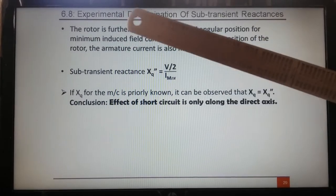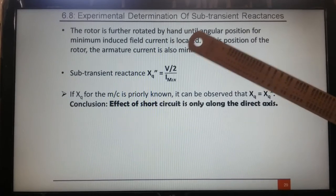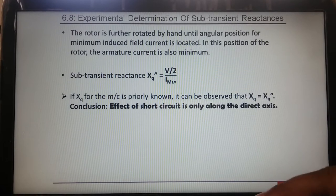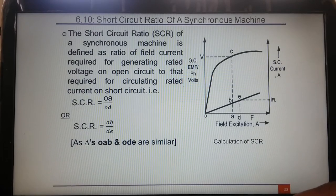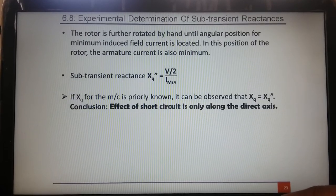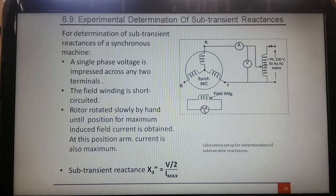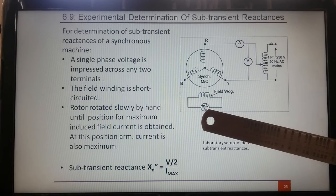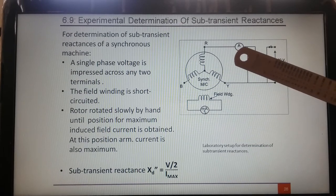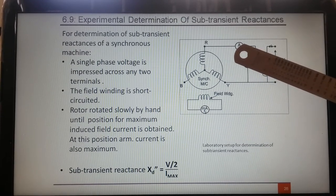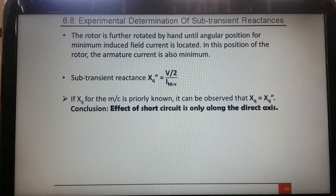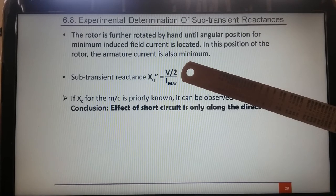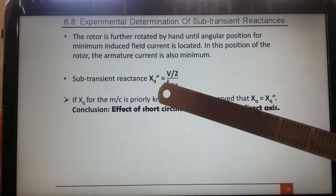Similarly, the rotor is further rotated by hand until the angular position for minimum field current is located. When the machine comes to the Q-axis, this current will be minimum, and correspondingly the armature current will also be minimum. That is why you get XQ double dash, which equals I minimum with voltage per phase V by 2.